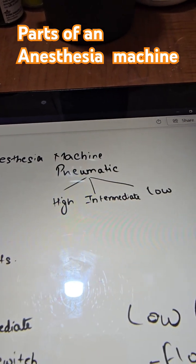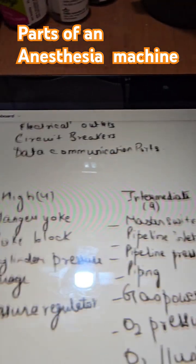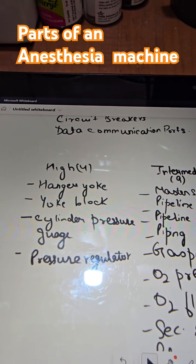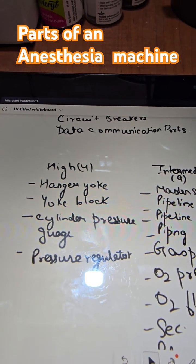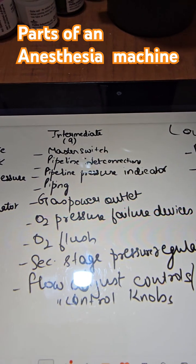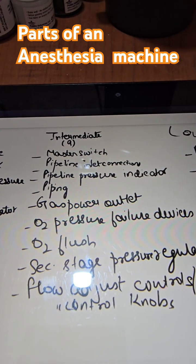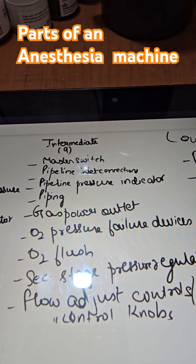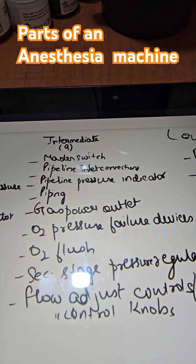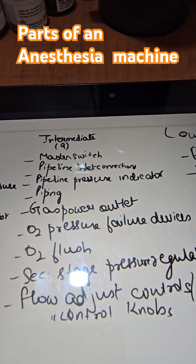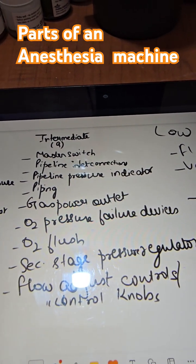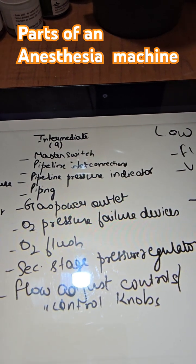The pneumatic part is further divided into high, intermediate, and low pressure systems. The high pressure system contains the hanger yoke, yoke block, cylinder pressure gauge, and pressure regulator. The intermediate pressure system consists of the master switch, pipeline interconnections, pipeline pressure indicators, piping, gas power outlet, and oxygen pressure failure devices.